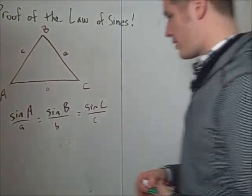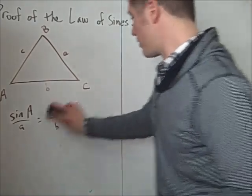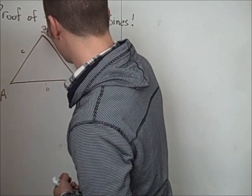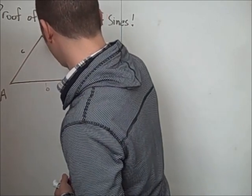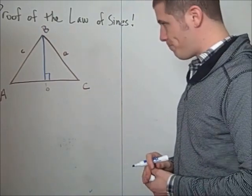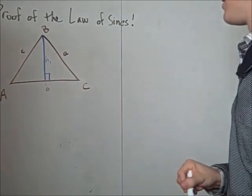To prove this theorem, we start by dropping a perpendicular from vertex B to side b. Like this. And let's call this length H1.